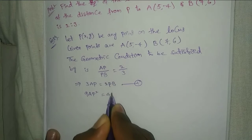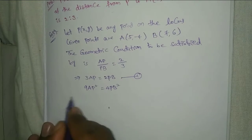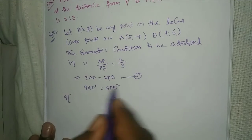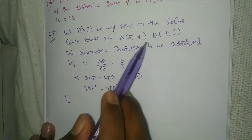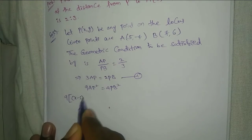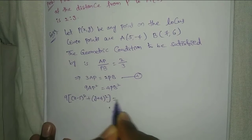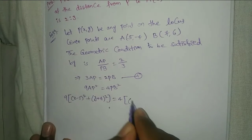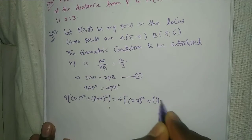Squaring on both sides: 9AP² = 4PB². Now, 9 into (x - 5)² + (y + 4)² = 4 into (x - 7)² + (y - 6)².